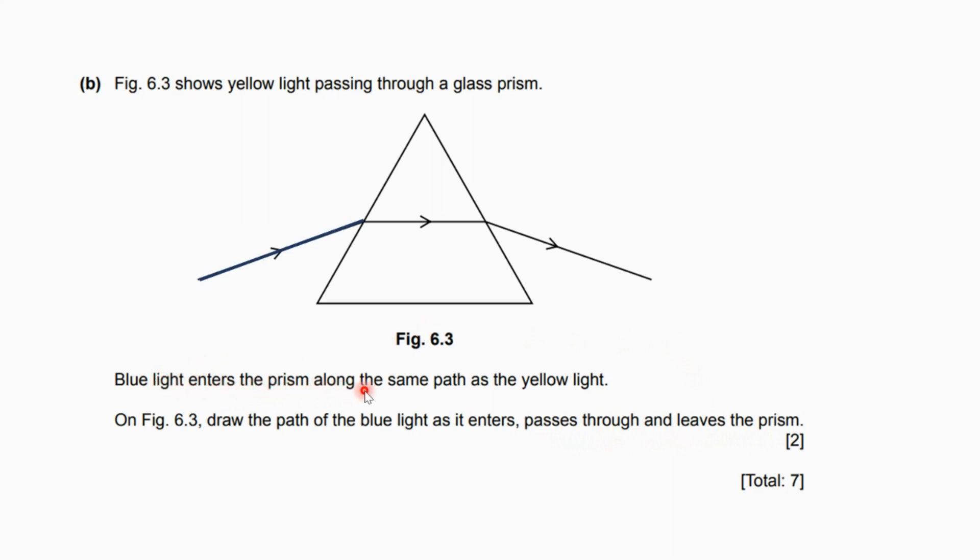Here, because he said the blue light enters the prism along the same path, I draw the blue here. Then second point is to draw the normal, which makes a 90 degree with the first surface or the first side of the glass prism, and it's going to be a dotted line.